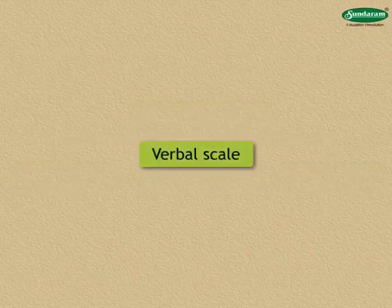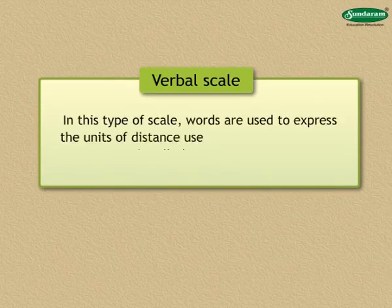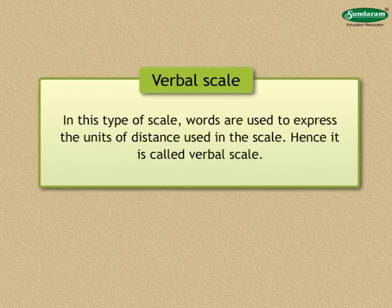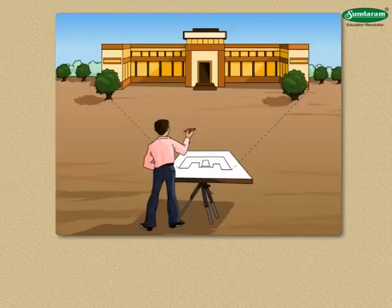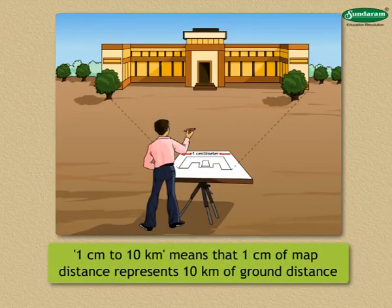Verbal scale. In this type of scale, words are used to express the units of distance used in the scale. Hence, it is called verbal scale. For example, the scale 1 centimetre to 10 kilometre means that 1 centimetre of map distance represents 10 kilometre of ground distance.